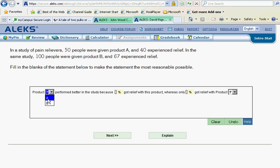Performed better in the study because 80% got relief with this product, whereas only 67% of product B found relief. Read these carefully because they can find all kinds of tricky ways to ask this question. Let's check it, and we see that ALEKS is happy.